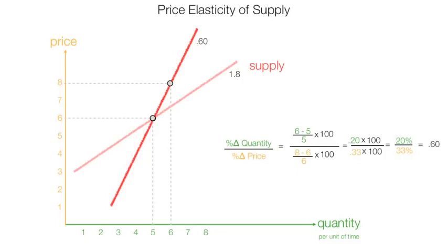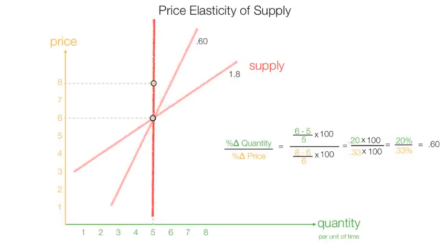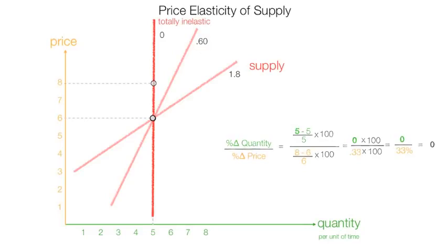So as supply becomes more inelastic, price elasticity of supply decreases. What happens if supply is perfectly inelastic? Percentage change in quantity becomes 5 minus 5, divided by 5, or 0, times 100, which is a 0% increase in quantity. While the percent change in price is exactly the same, so price elasticity of supply is equal to 0. If supply is perfectly or totally inelastic, price elasticity of supply is 0.